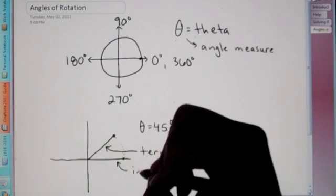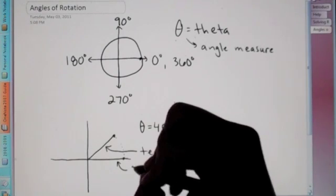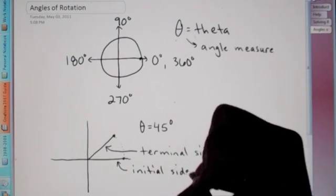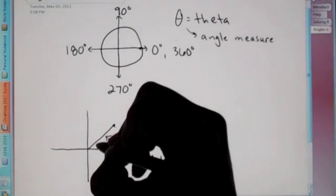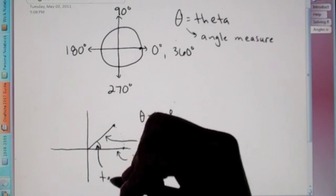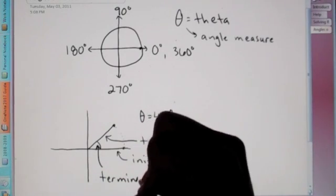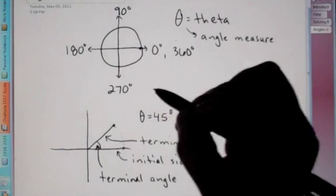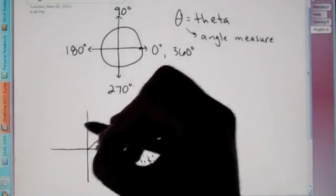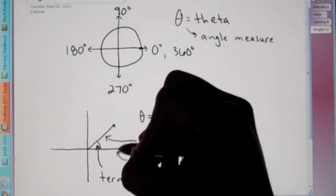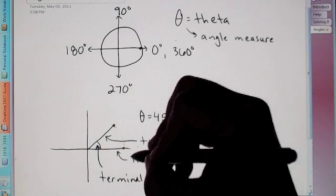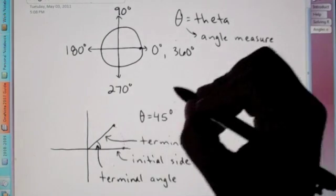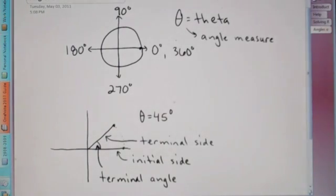This, where you begin, is called the initial side. Which makes this right here your terminal angle. So, that's really the three things you need to know. We have our terminal side. That's the thing that's going to be rotated all the way around. This is your initial side. It's where you start. Remember, you always start on the positive x-axis. And, if it's a positive angle, you go counterclockwise. If it said negative 45, you go clockwise. And, this would be our terminal angle.